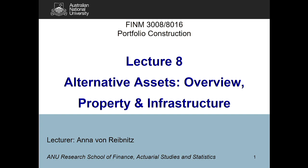When we give a definition of what alternatives are, what we actually do is define what alternatives are not. Anything that isn't public equity or public fixed income can be seen as an alternative asset class. So when we look at the general attributes of alternatives, remember that an attribute won't necessarily apply to every different alternative asset class.